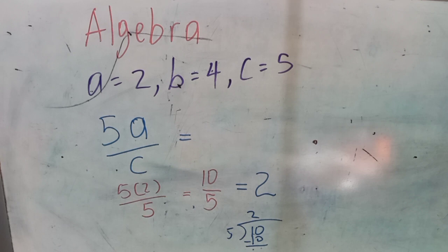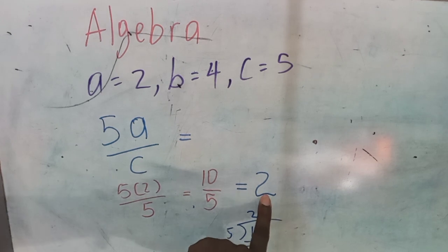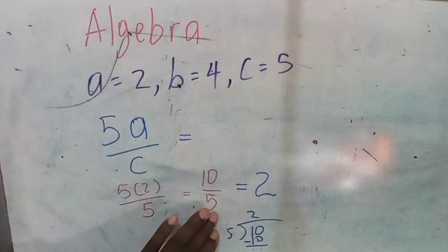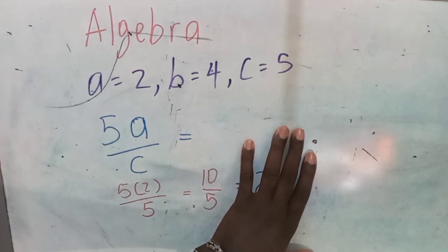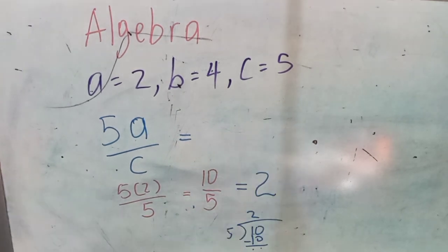So we never leave our answer as an improper fraction here. If you leave it like this, it is not correct. An improper fraction, the value of the improper fraction is always going to be 1 or more. In this case, it's more than 1 because it is 2. Never leave your answer as an improper fraction. You always turn it into a mixed number or just a whole number by itself.